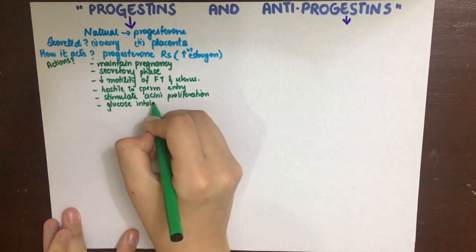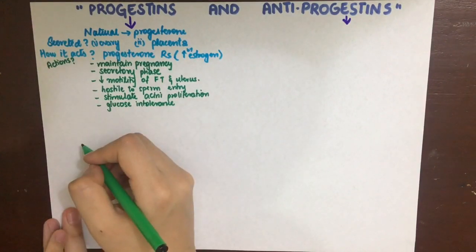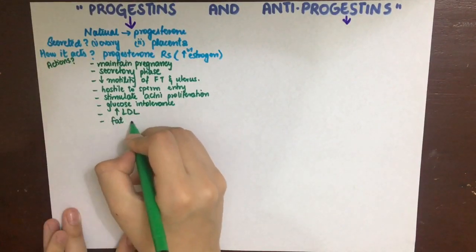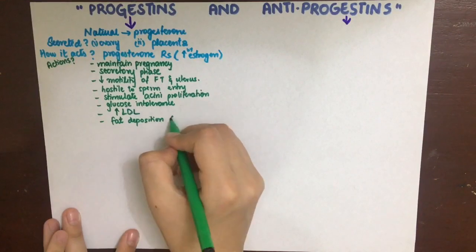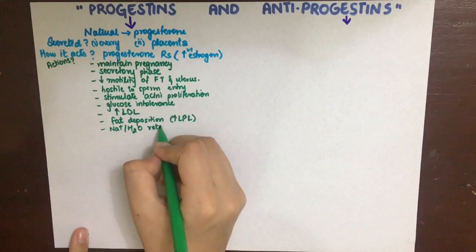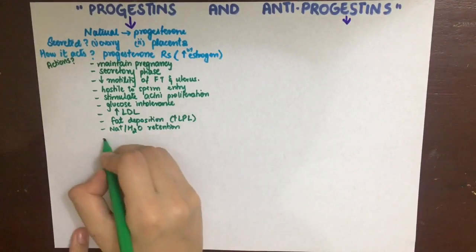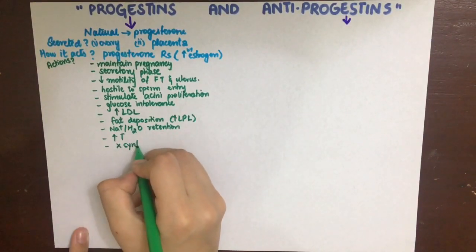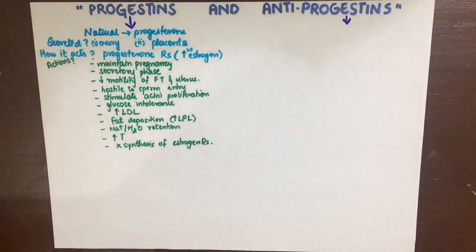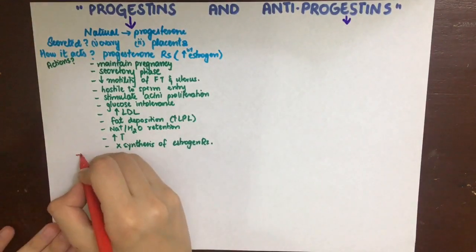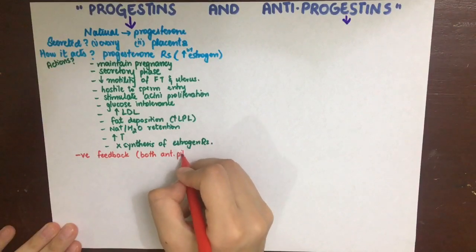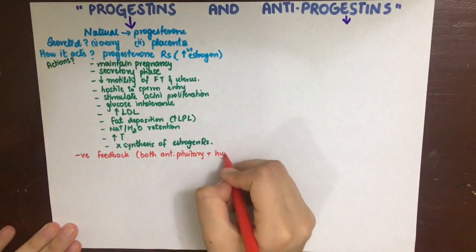It can also cause hyperglycemia, a diabetic-like condition, on long-term use. It increases LDL, which is beneficial for the developing fetus because it is making cell membranes. It favors fat deposition by increasing lipoprotein lipase activity. It also has mineralocorticoid activity and thus causes edema. It increases the temperature of the body and inhibits synthesis of estrogen receptors. In contrast to estrogen, progesterone has negative feedback on both the hypothalamus and pituitary, thus decreasing FSH and LH secretion and inhibiting ovulation.